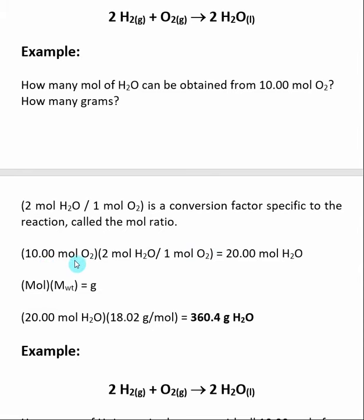So if I use up 10 moles of O₂, I will make 20 moles of H₂O. So now I need to find out the number of grams. Remember, grams is equal to moles times molecular weight. We know that we have made 20 moles of H₂O. The molecular weight of water is 18.02 grams per mole. We multiply through, and we get an answer of 360.4 grams of H₂O. So if I use up 10 moles of O₂, I can make 360.4 grams of H₂O.